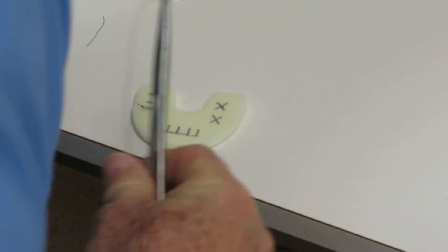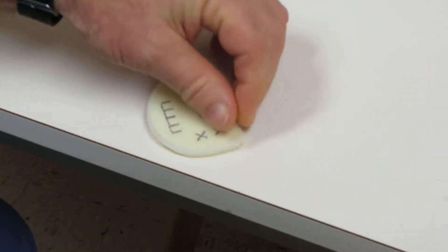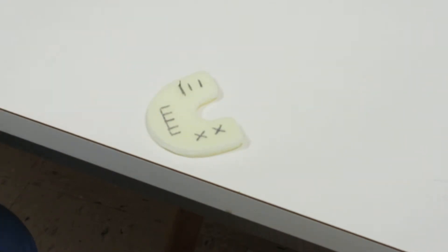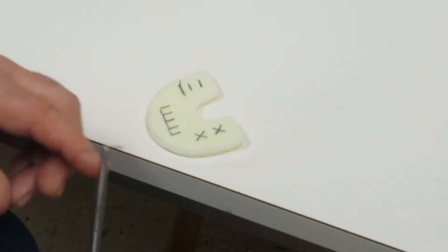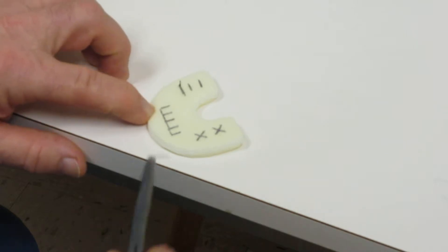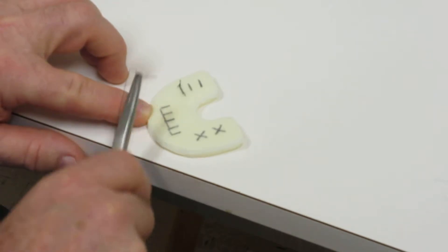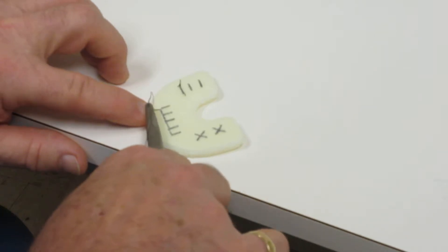Now the continuous locking suture is something that you would use if you've extracted a bunch of teeth or you've done exostosis removal for a denture. It's very beneficial that instead of having to do interrupted sutures and do all the ties, you tie it once on each end.